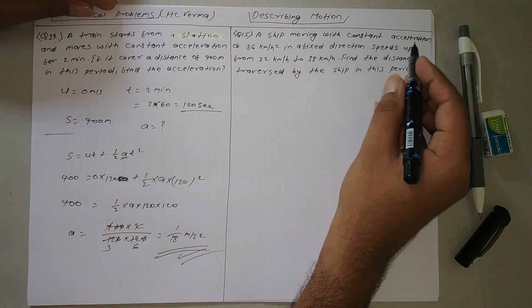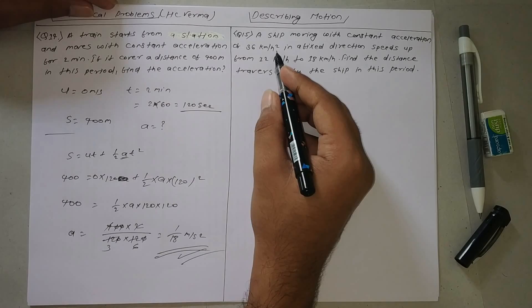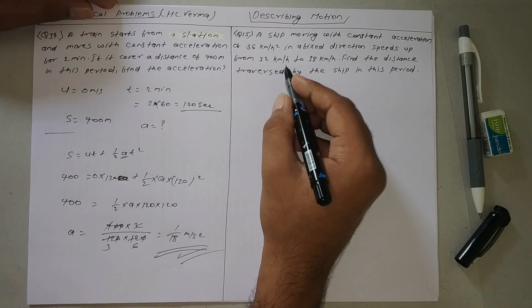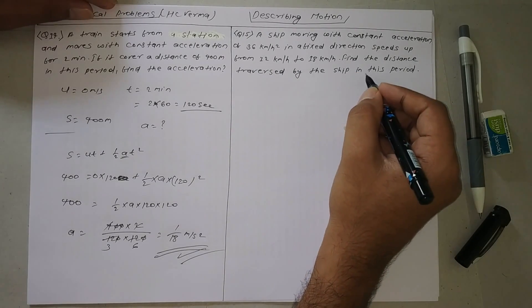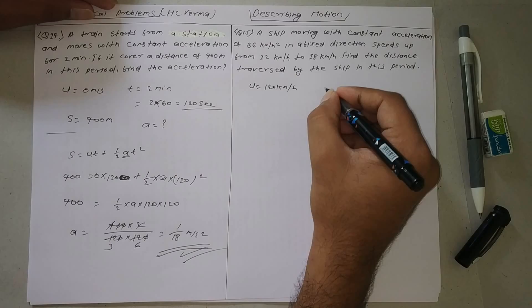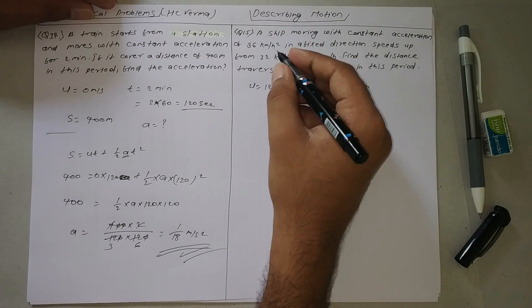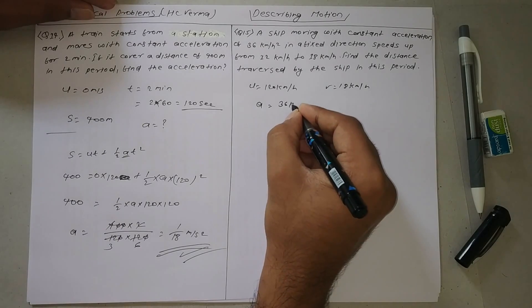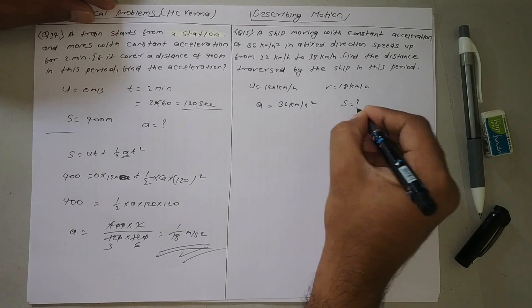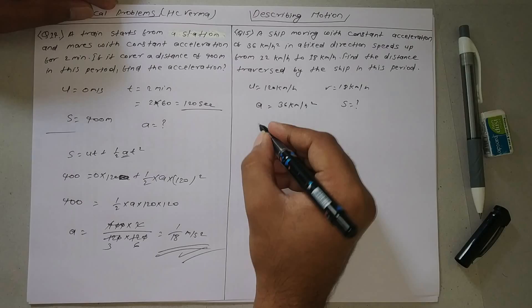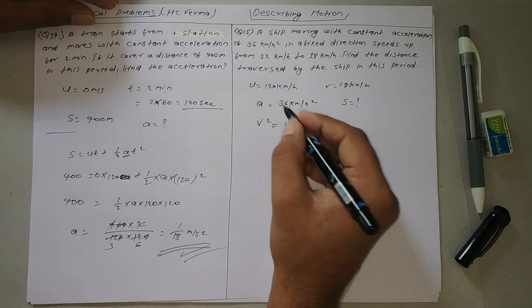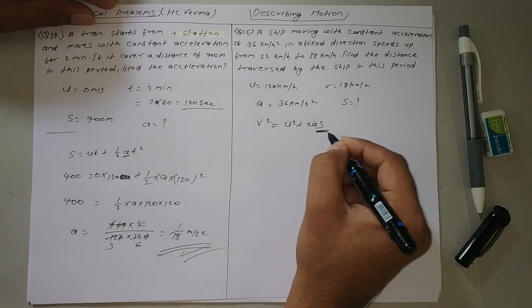The next question: an object has a constant acceleration of 36 kilometers per hour squared in a fixed direction. It speeds up from 12 kilometers per hour. v is 18 kilometers per hour, and a is 36 kilometers per hour squared. We need to find the distance s traversed. We know v, u, and a, so we can calculate s.